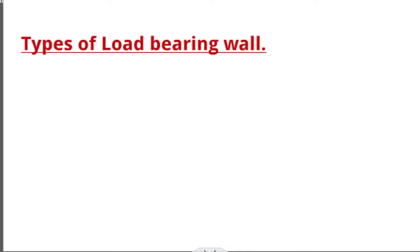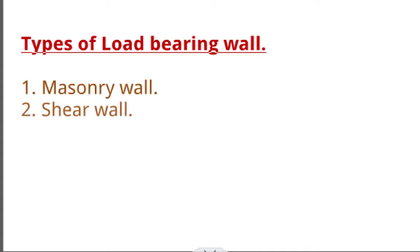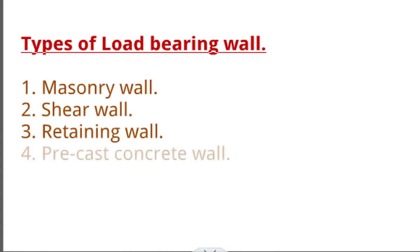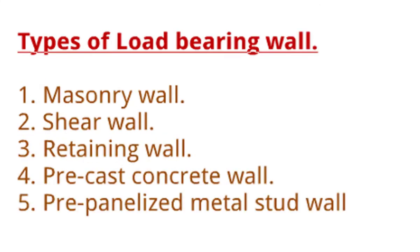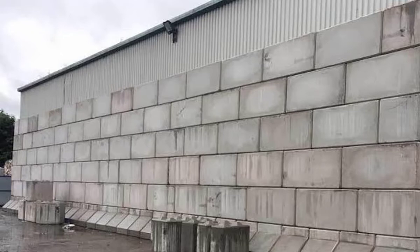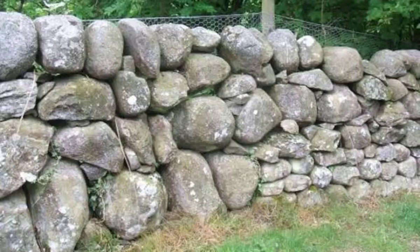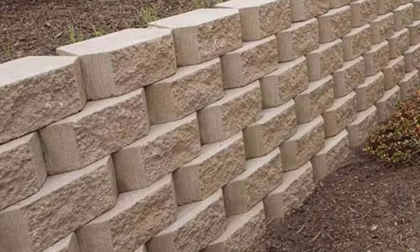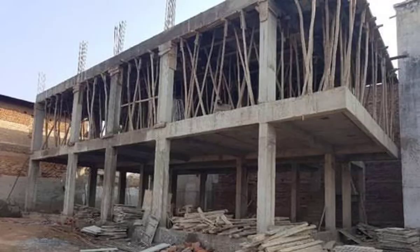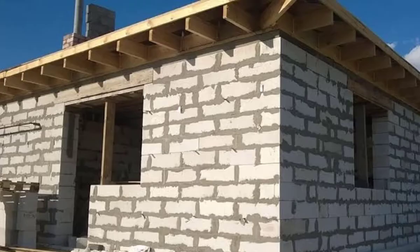Types of load-bearing wall: one, we have the masonry wall; we have the shear wall; we have the retaining wall; we have the precast concrete wall; and we have the pre-panelized metal stud wall. A masonry wall is a wall that is built with block, brick or stone, and then bound by mortar. This wall is the most common load-bearing wall. You can find it both in frame structure and load-bearing structure systems like bungalows, and it supports roof, floor, lintel and the likes.